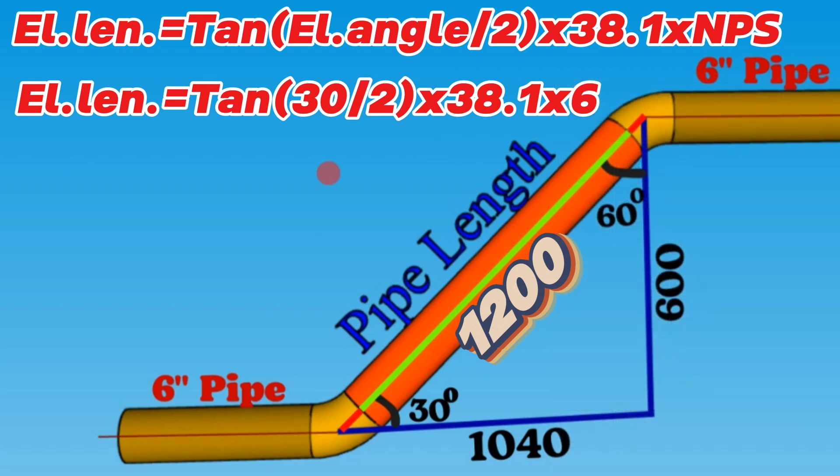So, we calculated and found that the 6-inch 30-degree elbow center-to-end dimension will be 61 millimeters.